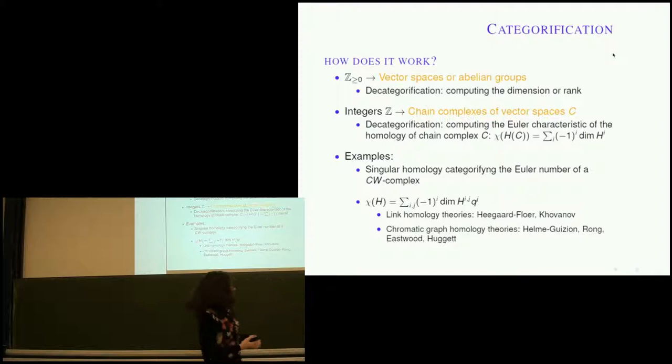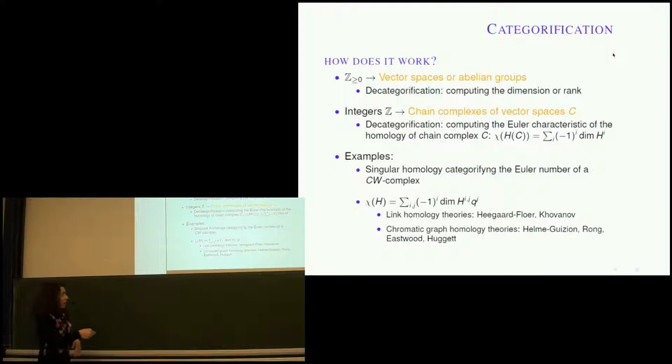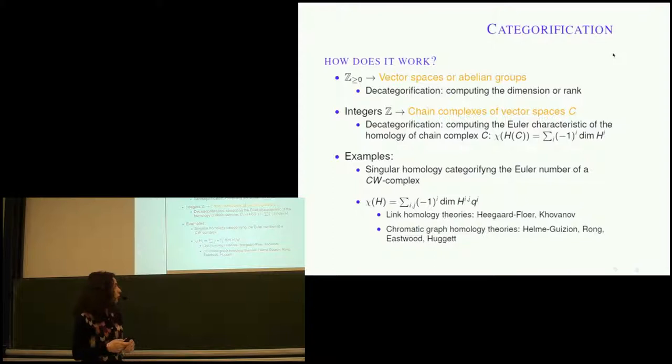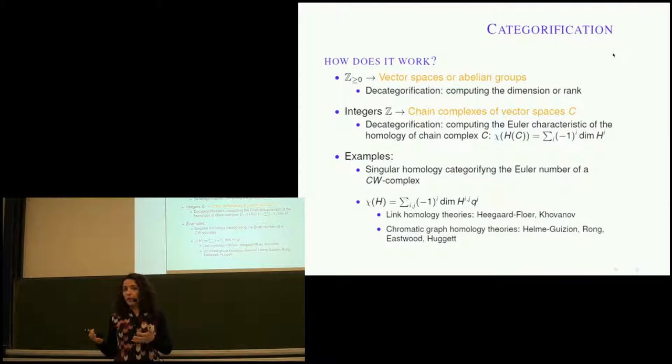Singular homology, for example, is an example from standard algebraic topology — that's an example of categorification. The theories of Khovanov homology and the Heegaard Floer homology in knot theory, and chromatic homology in graph theory, all fall into this example. If you compute the Euler characteristic of the homology, you get the polynomial back.